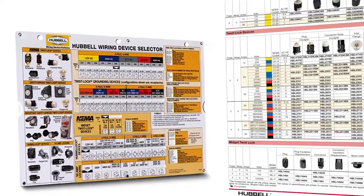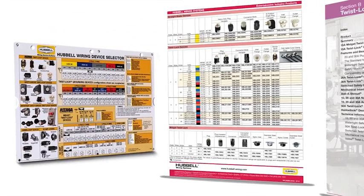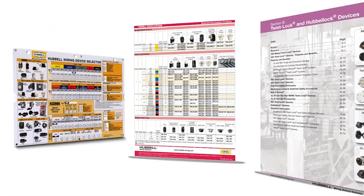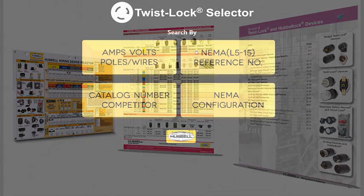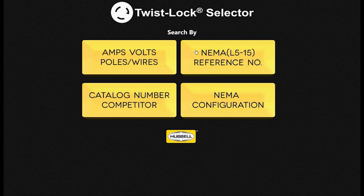In the past, the only option was to use a slide selector, catalog, or NEMA chart to select the devices you need. Now Hubble has developed a digital option that is faster, has more options, and is at your fingertips.